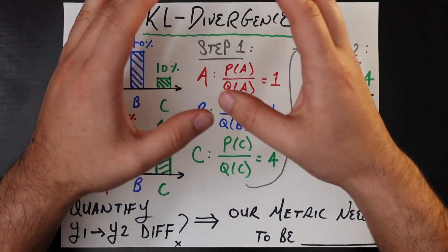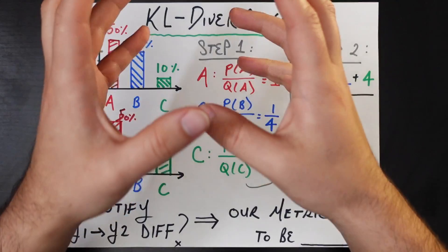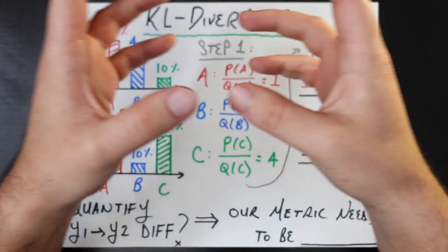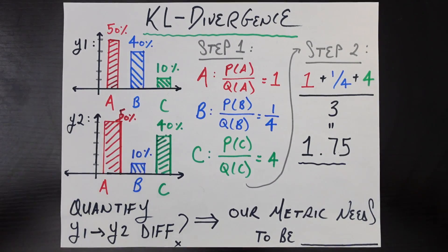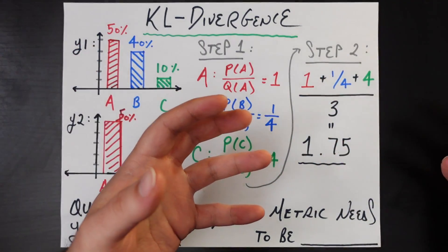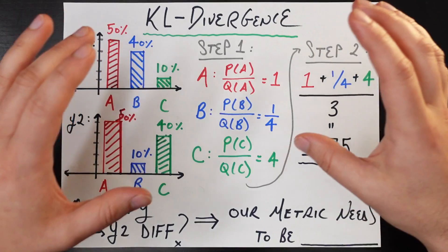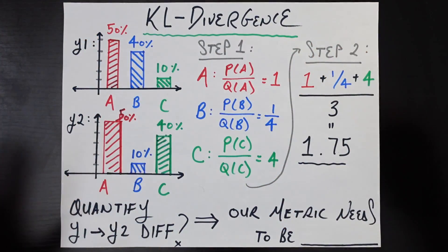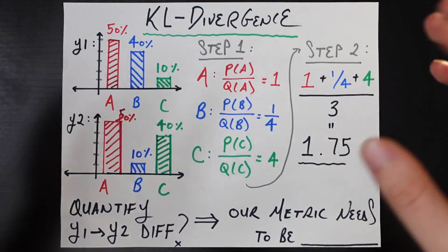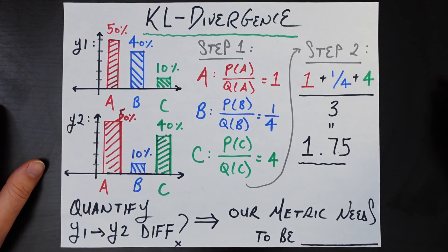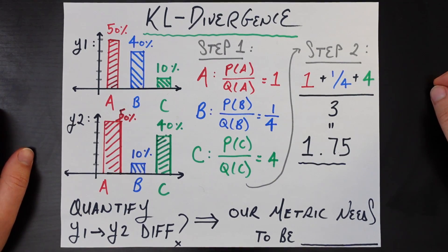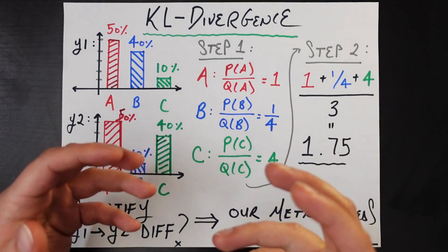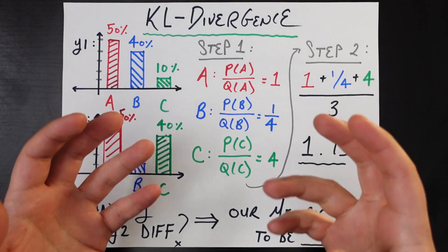Many students will start from the formula — for example, from the definition of the KL divergence in mathematical form — and try to understand what's going on. But I think that's destructive for a lot of different reasons. Firstly, if you're looking at a formula and it looks rather complicated, you can get disheartened and feel like there's no way you can figure out what's going on. And the other is that it's not really the way math was developed in the real world.